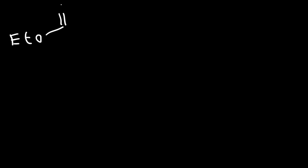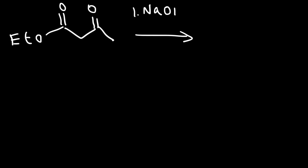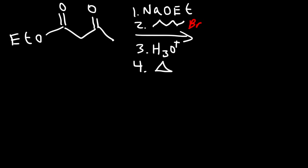Go ahead and try this problem. In the first step, we're going to use sodium ethoxide, just like before. In the second step, we're going to react it with pentyl bromide. Followed by the third step, which will be H3O+. And then the fourth step will be heat. So go ahead and draw the major product for this reaction. Now let's write out a mechanism. The first step is deprotonation of the alpha hydrogen.